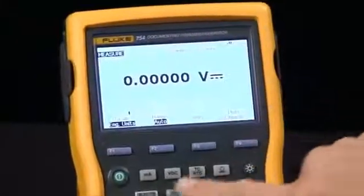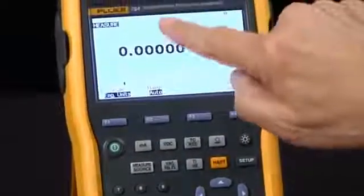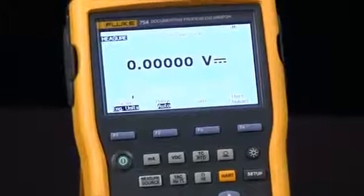There are three screens: measure, source, and the split screen that has measure and source. We're in the correct screen to measure an RTD.